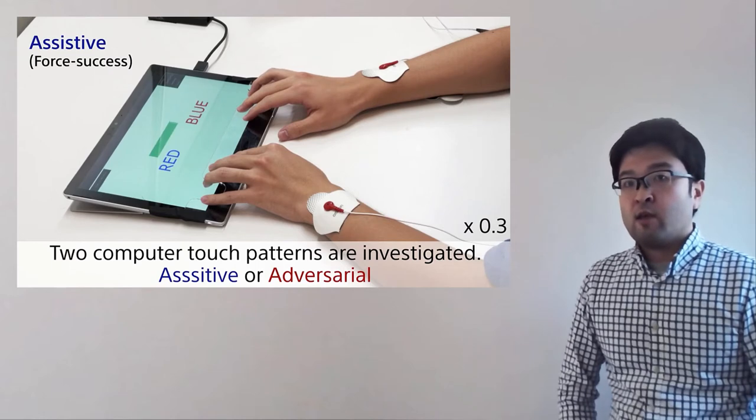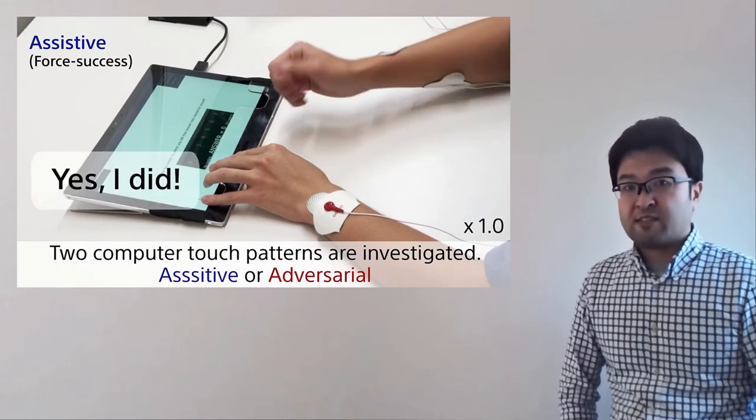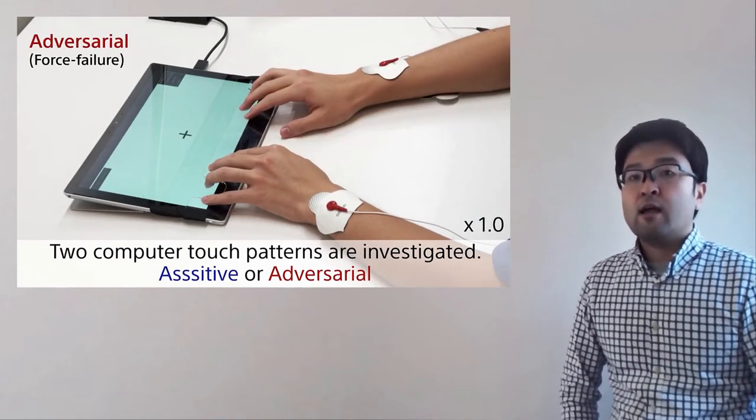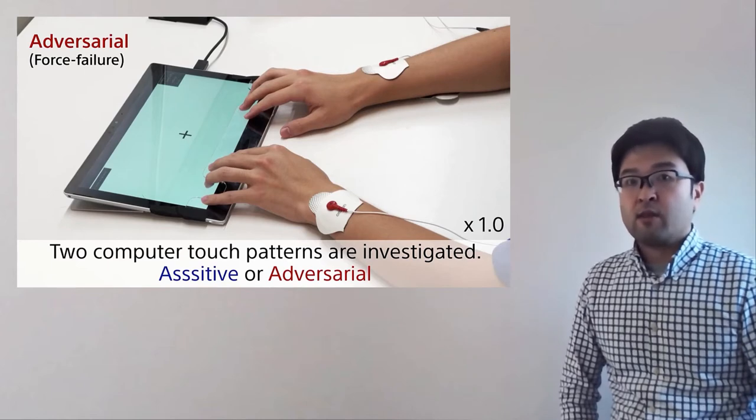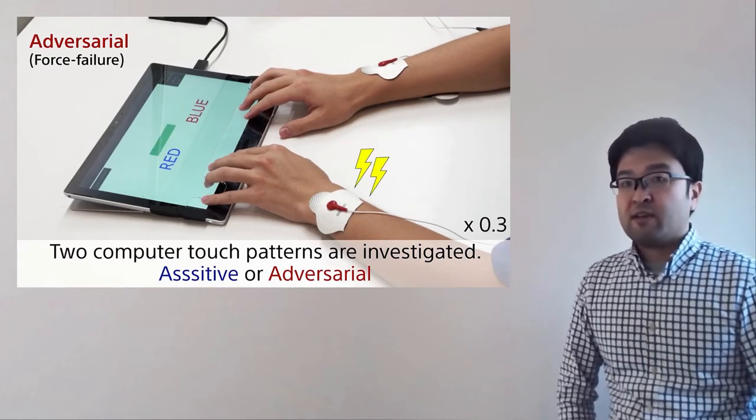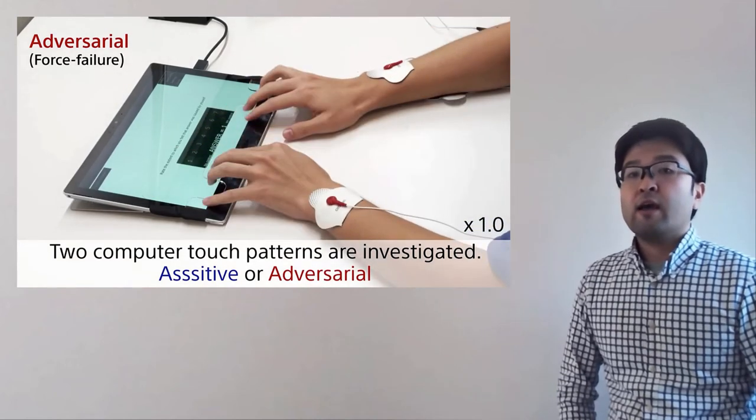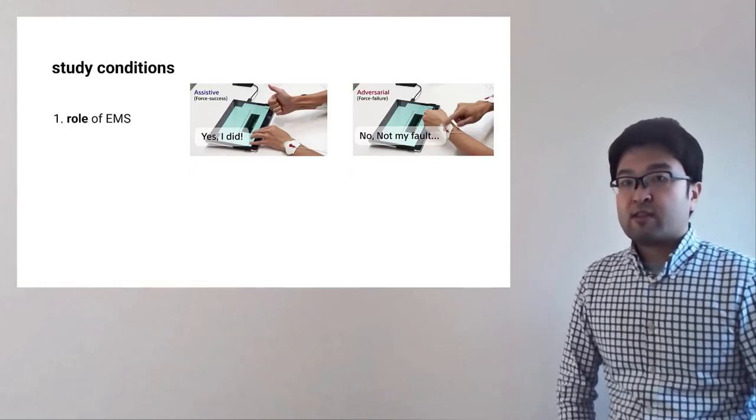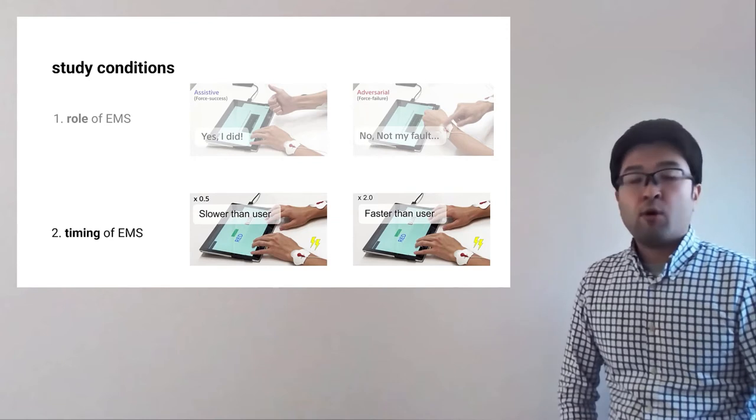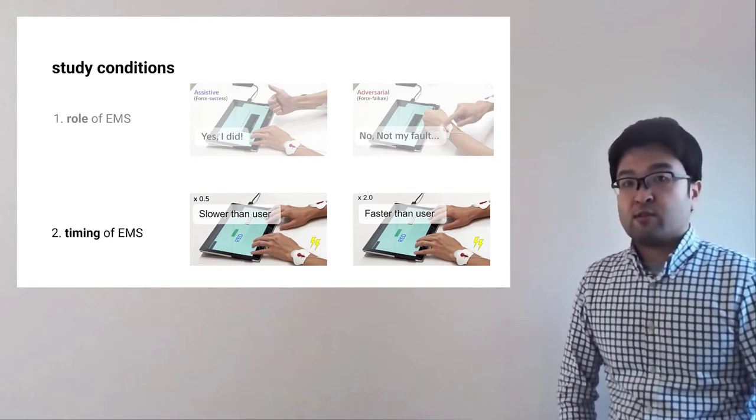We also control the role of the muscle stimulation. One is assisting. Muscle stimulation makes the user's success. And also adversarial. Muscle stimulation makes the user's failure. In addition, we control the timing of the muscle stimulation faster or slower than the user's input.